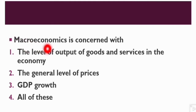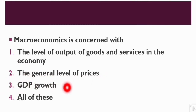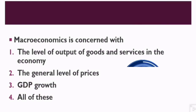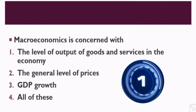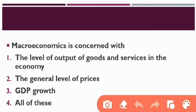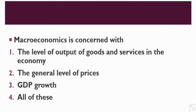Question number 1: Macroeconomics is concerned with — Option 1: The Level of Output of Goods and Services in the Economy, Option 2: The General Level of Prices, Option 3: GDP Growth, Option 4: All of These. The right answer is option number 4. Macroeconomics means we study the economy as a whole, that's why it includes all of these — the level of output of goods and services, the general level of prices, and GDP growth.